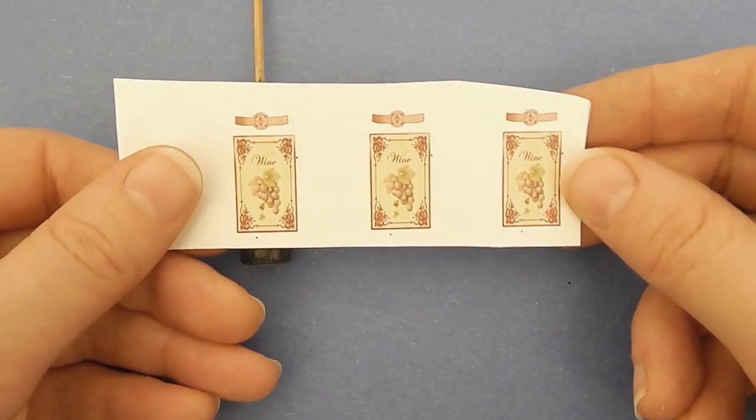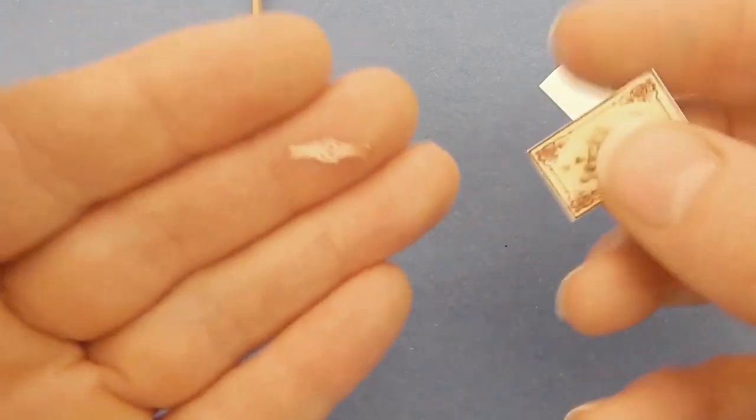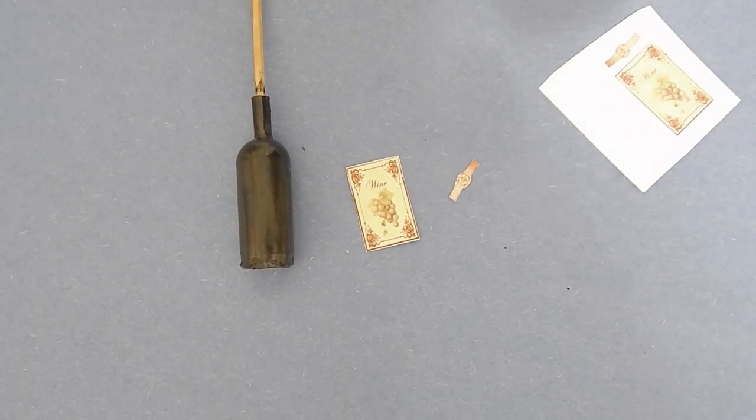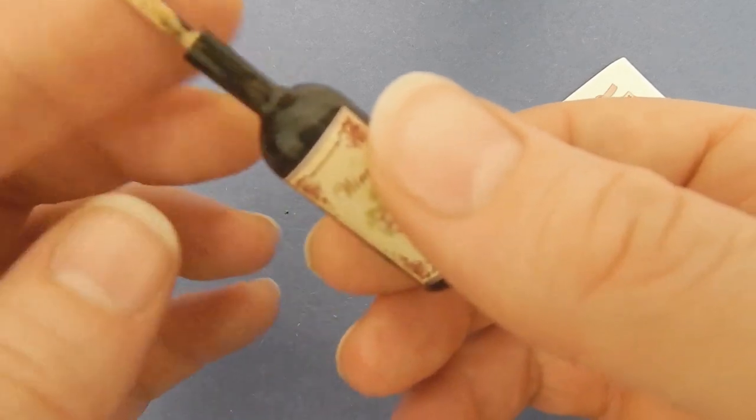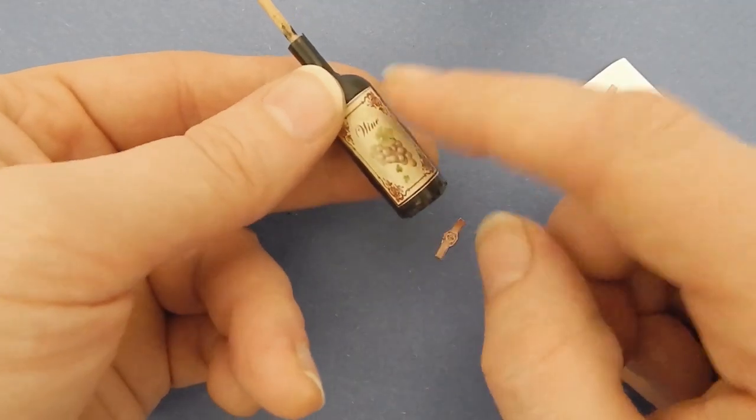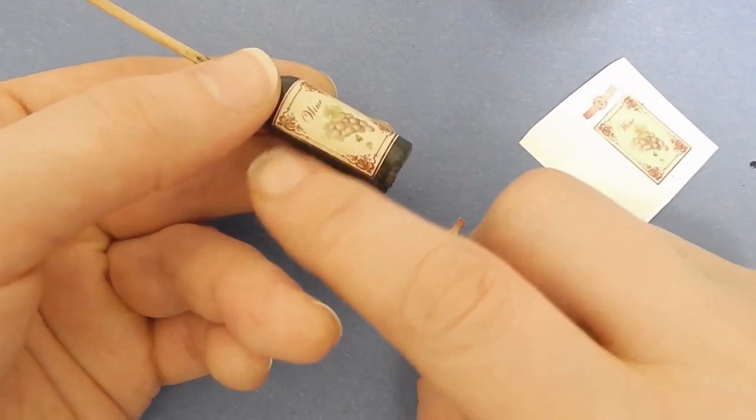I made these labels for the bottles and they're the perfect size. I have them available in the description. You can print them out on sticker paper or just regular paper. I printed mine on decal paper with a laser printer. If you're using an inkjet printer, just make sure you're sealing the ink so it doesn't run.